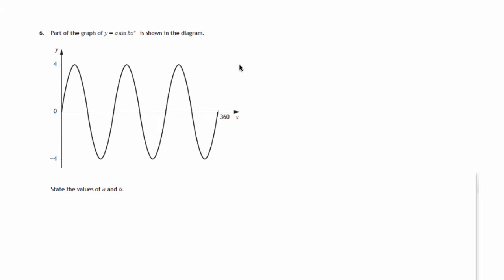This is question 6 from paper 1 of the 2015 National 5 SQA maths exam. We're given a graph and we're told it's part of the graph of y equals a sine bx. We're asked to state the values of a and b.